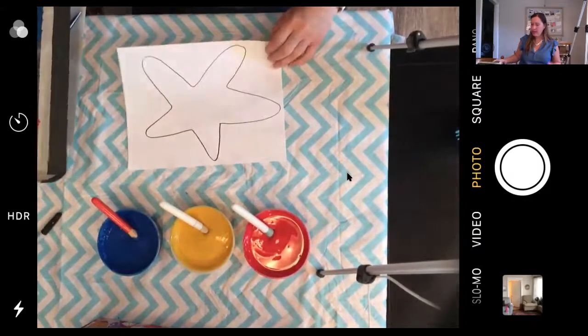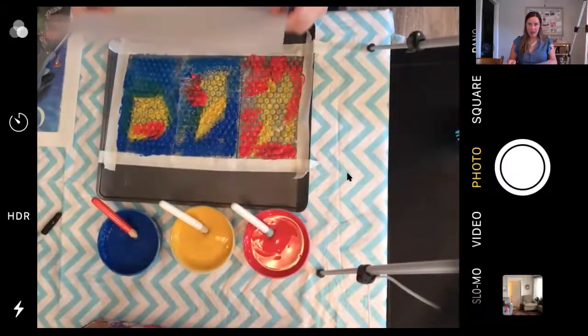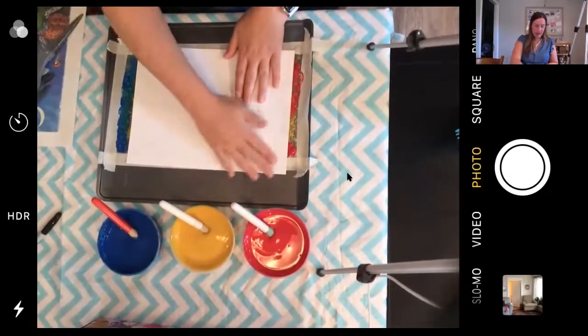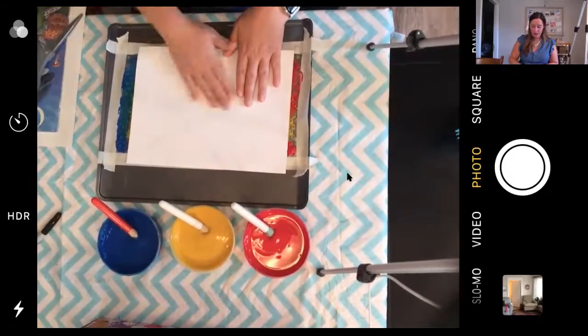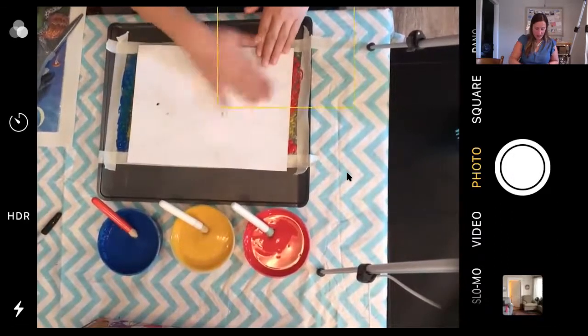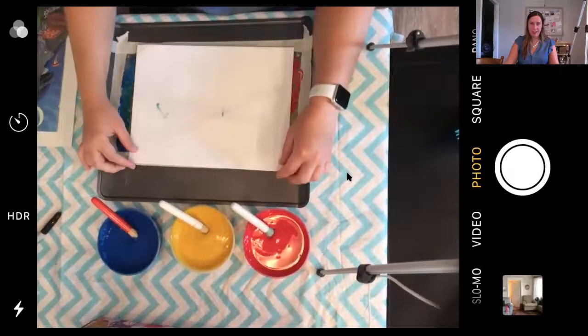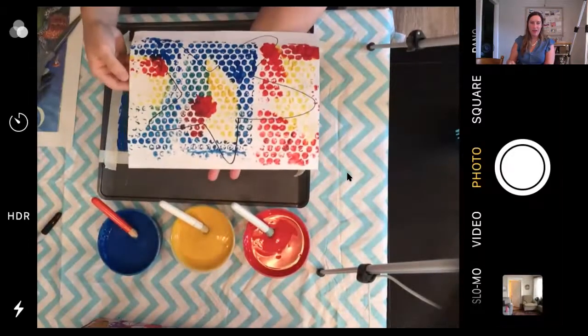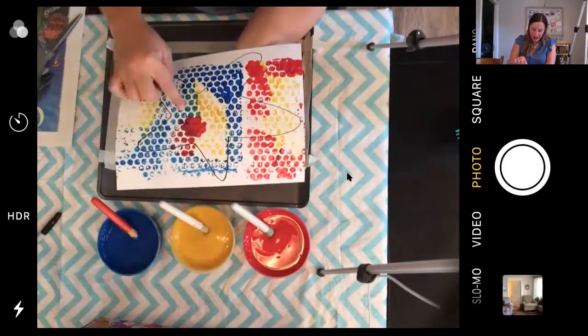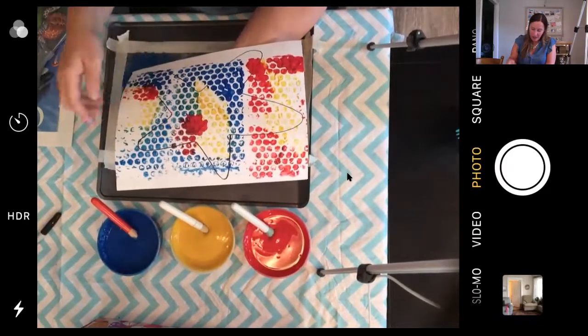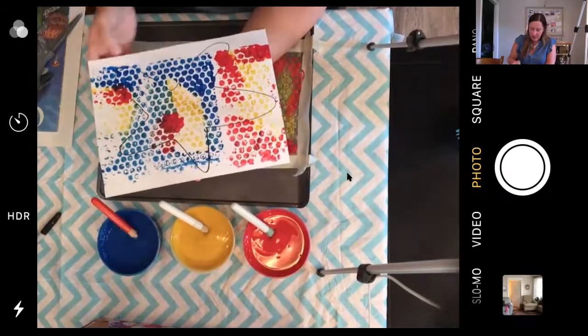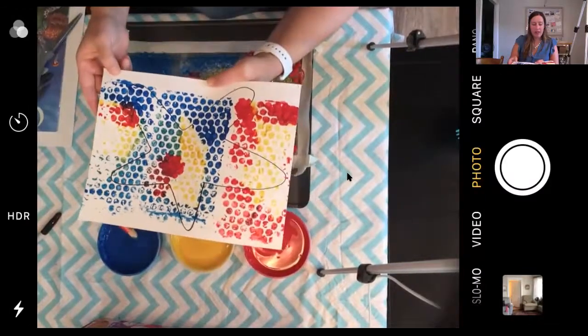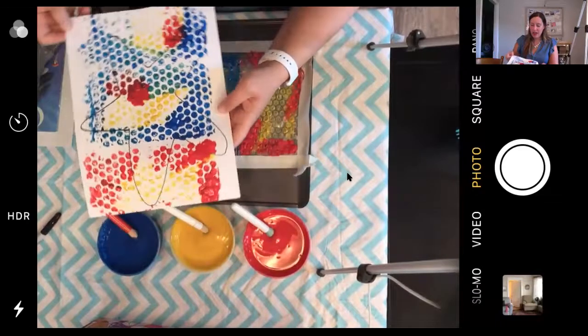Then you're going to take your paper and you're going to press it on top and rub it. I wonder what it's going to look like when I lift it up. Let's see. One, two, three. Wow, look at that. I see some green. I made some purple over here with the red and blue. And mine's a little wet, so I'm going to wait for it to dry to cut it out.